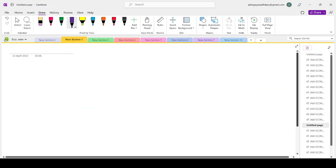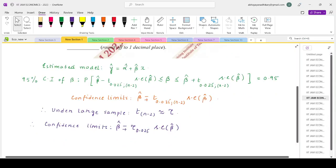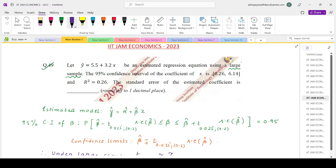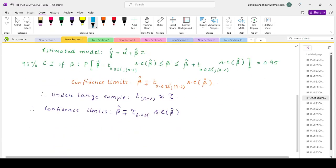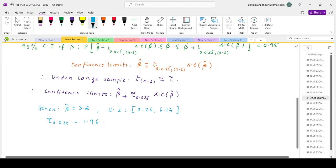We have been given three informations. First, our value of beta hat which is 3.2. The confidence interval is 0.26 to 6.14. And tau of 0.025, this is a very standard result, is 1.96. So using the confidence limits only, you can find out the standard error.